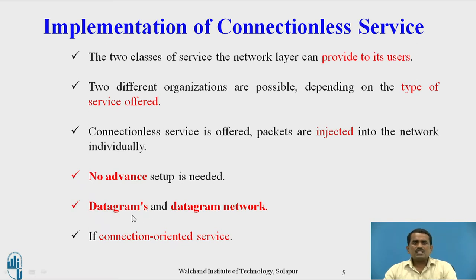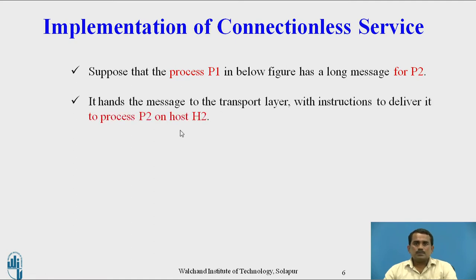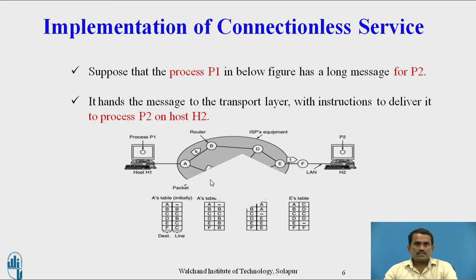A datagram is a set of information. For connection-oriented services, we need to use some connection. If there is no connection between transmitter and receiver, we send data directly with no need for network setup. Suppose process P1 has a long message for P2. P1 hands the message to the transport layer with instructions to deliver it to process P1 on host H2. Based on this example, we can understand the concept of connectionless services.